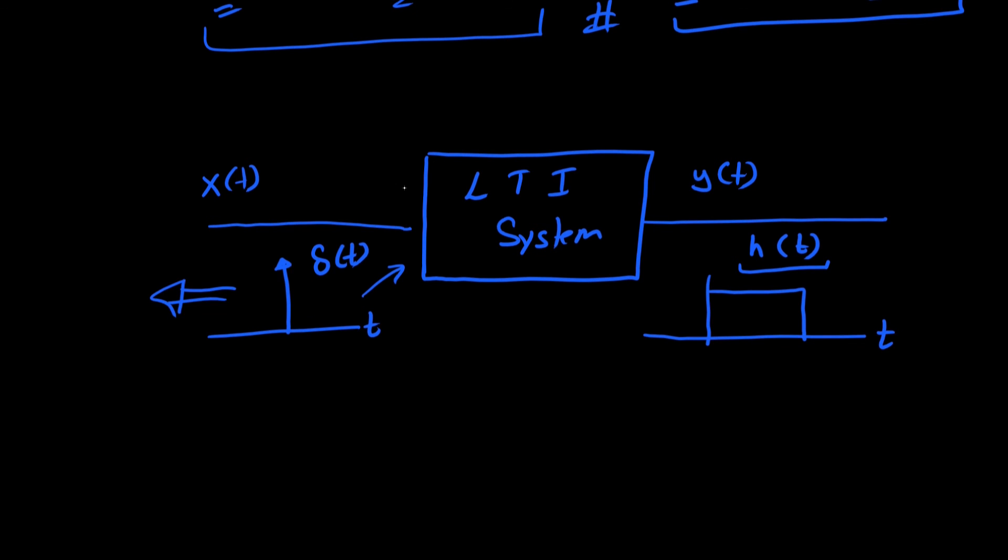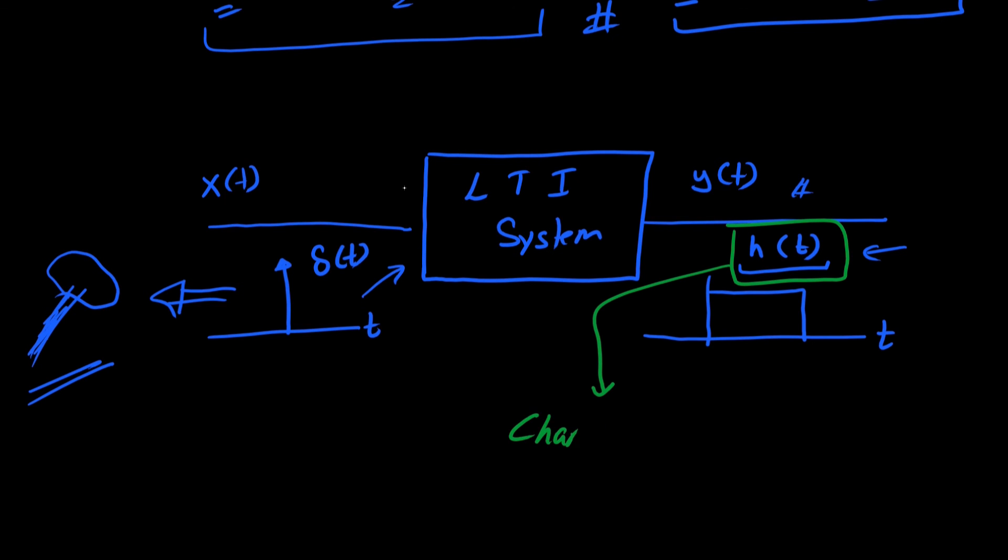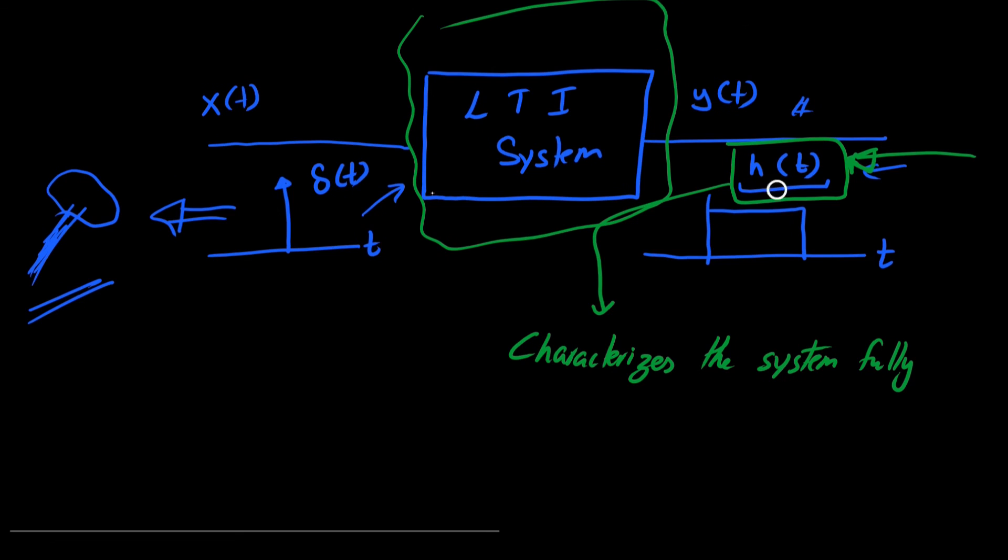A simple analogy here can be a hammer which is having an impulsive hit, and the reaction to that is the output, which we can term as the impulse response. Now this impulse response for an LTI system characterizes the system fully. That is, if you have h(t), you don't need to consider what was the original system. You can consider it as a black box. Having h(t) means that we have understood the system fully.